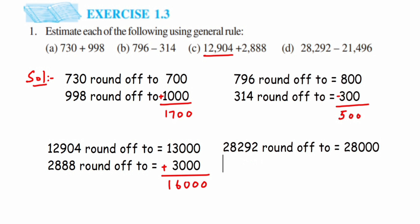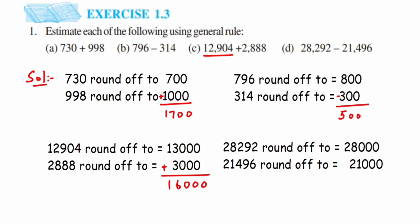Next, 21496 lies between 21000 and 22000. Since 496 is less than 500, it lies closer to 21000, so it rounds off to 21000. Since we're finding the difference, we subtract: 28000 minus 21000. The estimated difference is 7000.